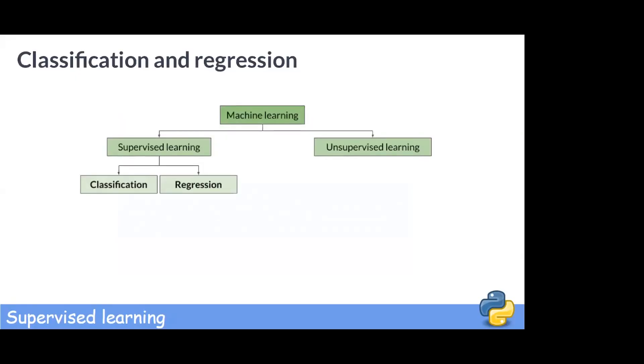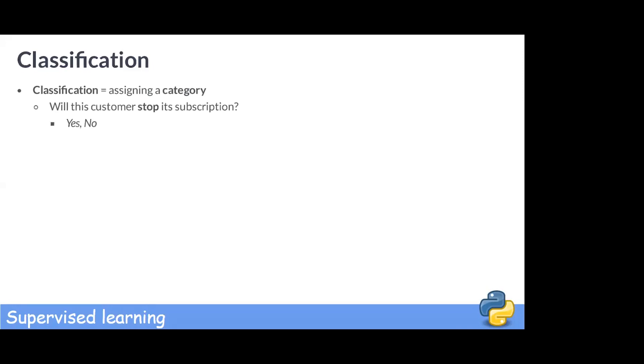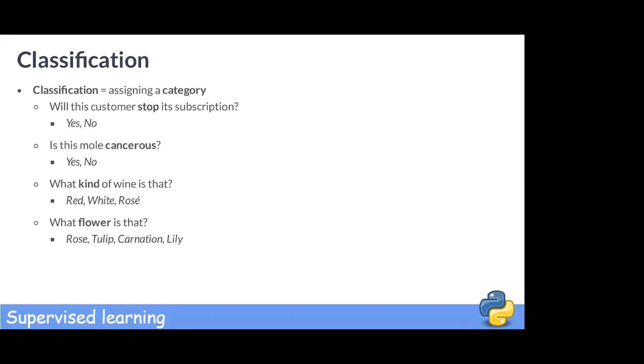Let's focus on classification first. Classification consists in assigning a category to an observation — we are predicting a discrete variable, that is a variable that can take only a few different values. Is this customer going to stop a subscription or not? Is this mole cancerous or not? Is this wine red, white, or rosé? Is this flower a rose, a tulip, a carnation, or a lily?